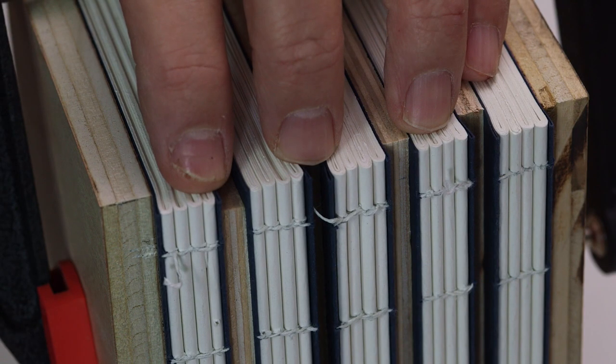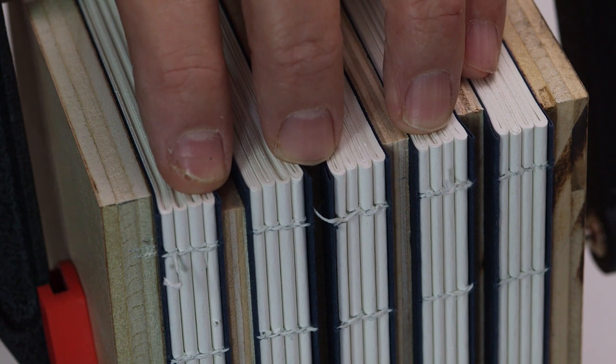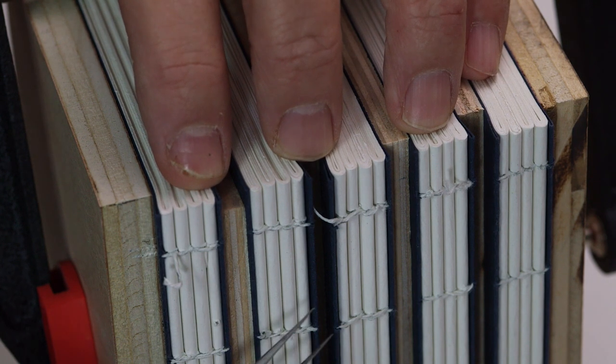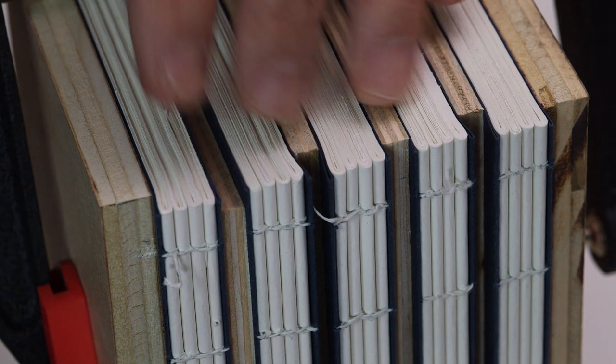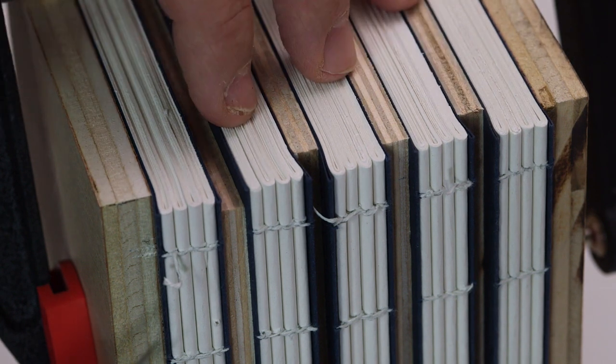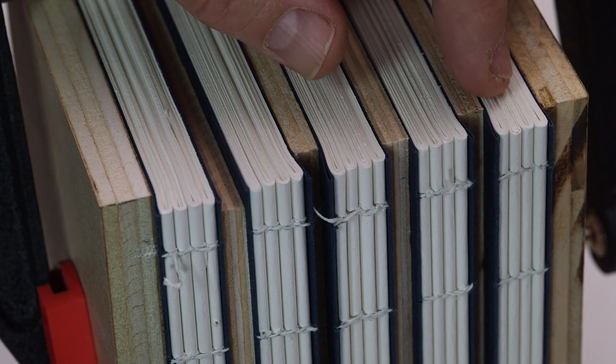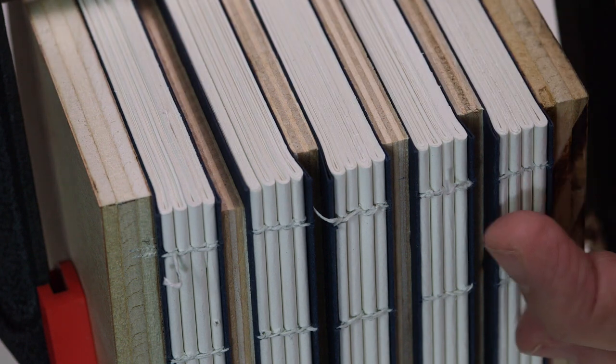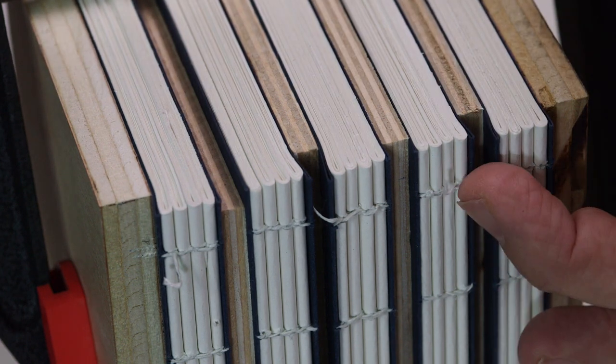I have five books clamped ready to apply a paper liner to the spine. I've placed thin blocks between them so that I have a bit of space. You can use cardboard or any type of material. The goal is to just keep the spines from touching each other.